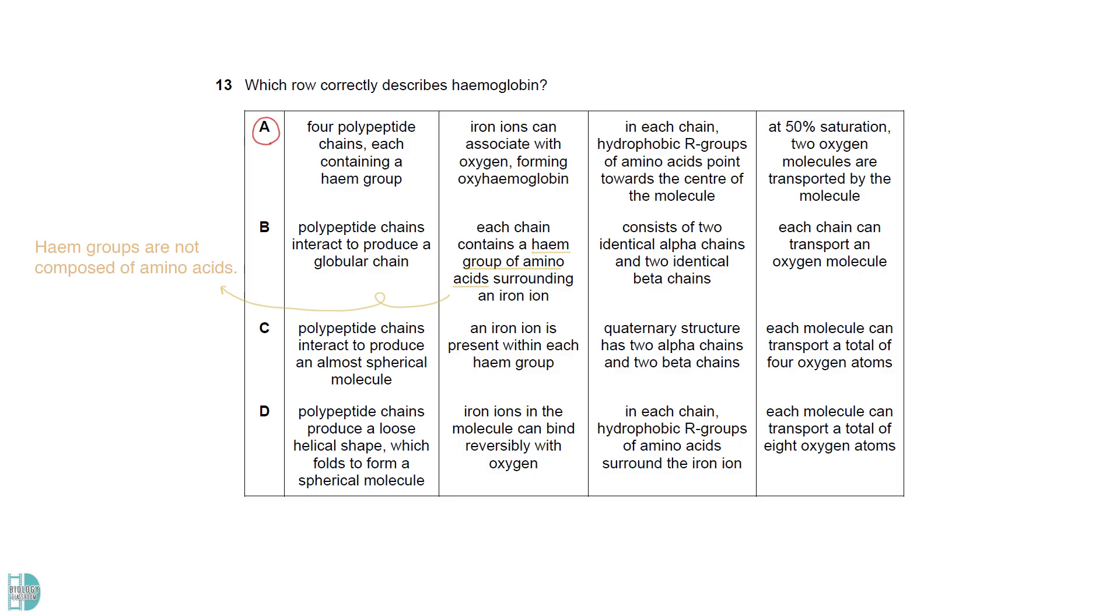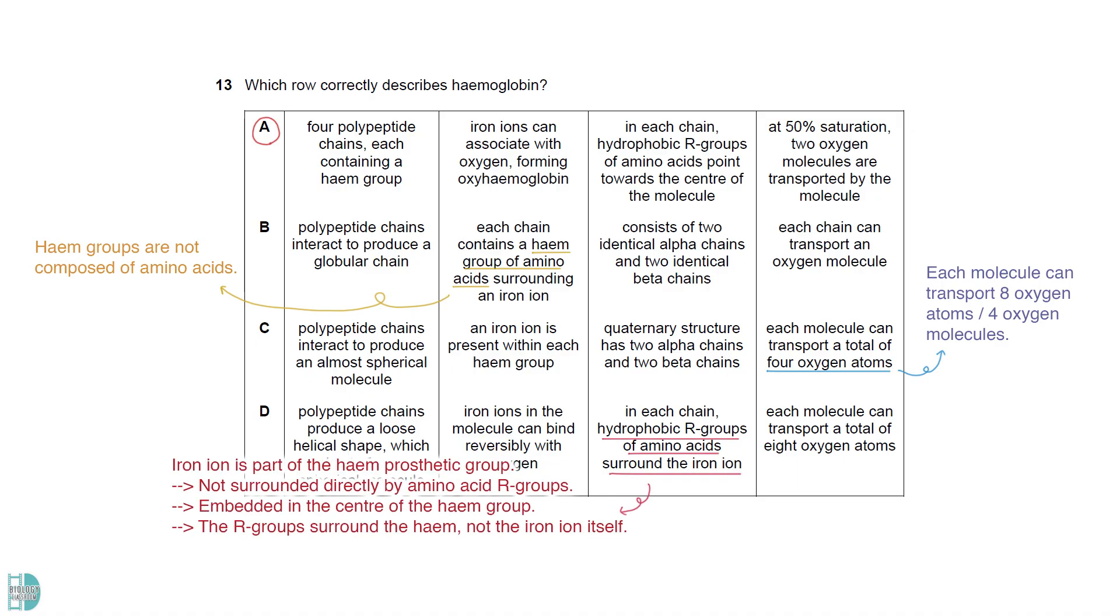A has all the correct descriptions. B is wrong because heme groups are not composed of amino acids. C is incorrect because each molecule can transport a total of 8 oxygen atoms, or 4 oxygen molecules. D is wrong. The iron ion is part of the heme prosthetic group. It is not surrounded directly by amino acid R groups. The iron is embedded in the center of the heme group. The R groups surround the heme, not the iron ion itself.